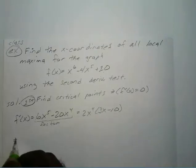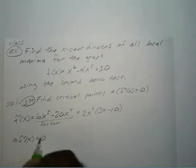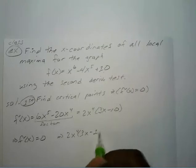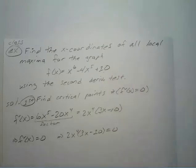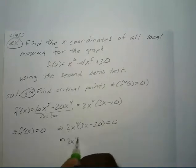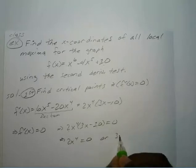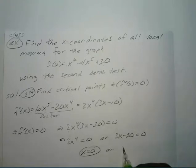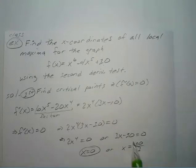To find where the first derivative equals zero, we set 2x to the 4th times 3x minus 10 equals zero. Setting both factors to zero: 2x to the 4th equals zero, or 3x minus 10 equals zero. That gives us x equals 0, or x equals 10 over 3. These are your critical points.